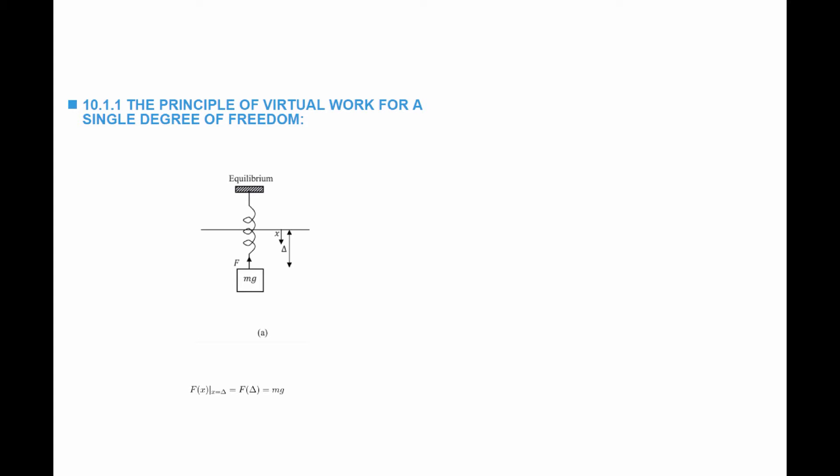A single degree of freedom system is made out of a spring carrying a mass m. In equilibrium, the force in the spring, which is a function of its extension x, is equal to the mass multiplied by g. So f(delta), where delta is the equilibrium extension of the spring, is equal to mg.